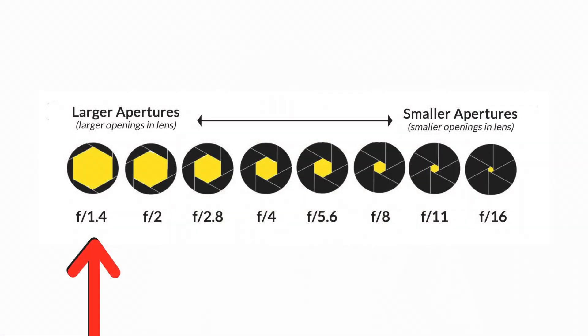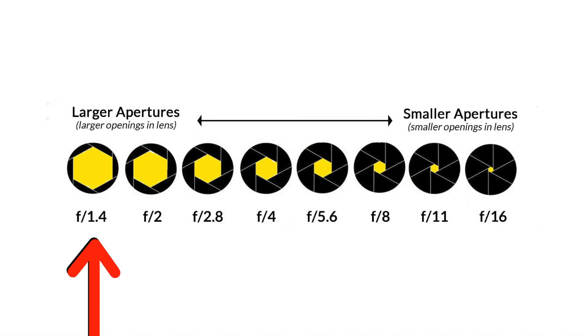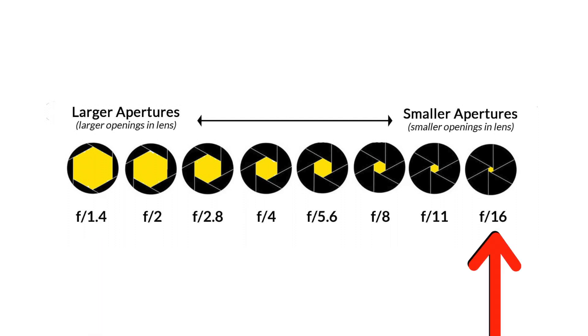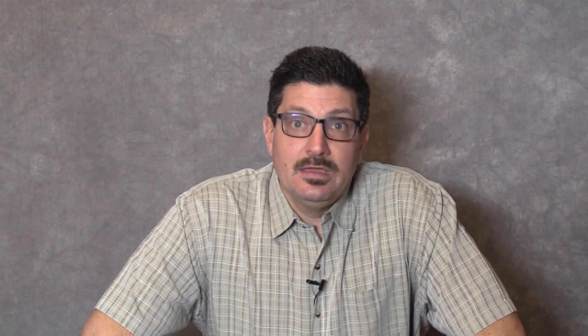The important thing to know about f-stops is that the smaller the number, the more light you're letting into your CCD or film. Conversely, the larger the number, the lower the amount of light you're letting into your camera. This inverse relationship with the aperture settings is what messes people up because it seems like a large number would mean a lot of light. However, it is exactly the opposite.